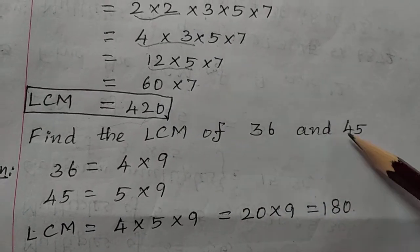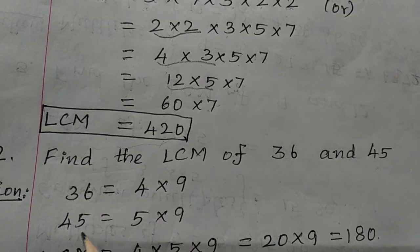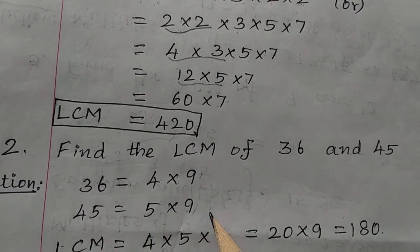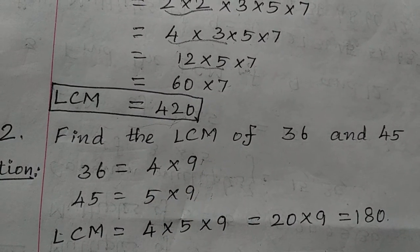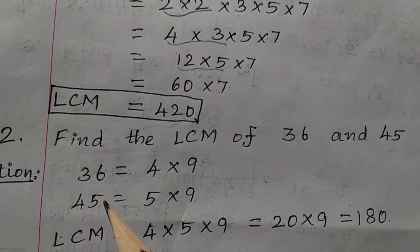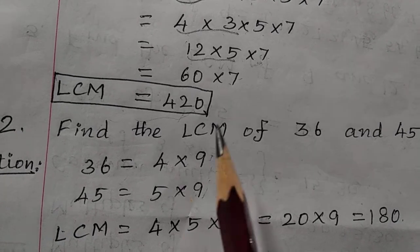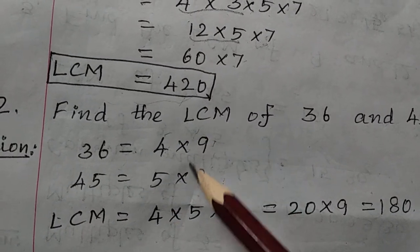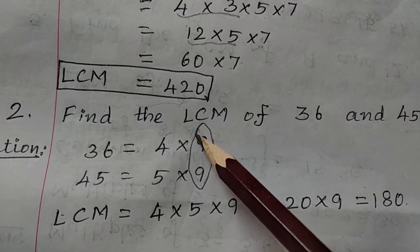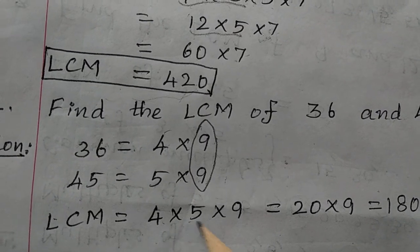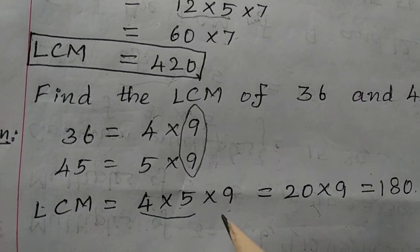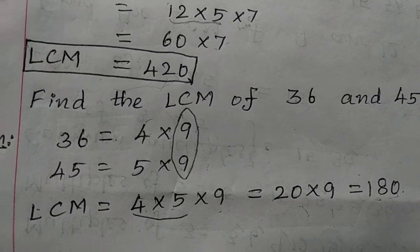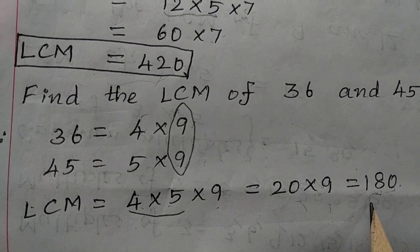Next example: Find the LCM of 36 and 45 by factorization. Express 36 as 4 × 9 and 45 as 5 × 9. This is factorization — not prime factorization, where each number must be expressed in terms of prime numbers only. LCM is the product of all factors. 9 is common in both, so write 9 only once. LCM = 4 × 5 × 9. 4 × 5 = 20, and 20 × 9 = 180. So LCM of 36 and 45 is 180.